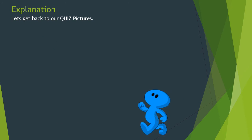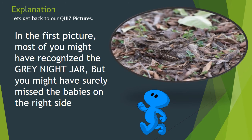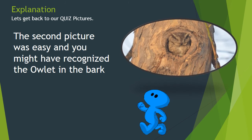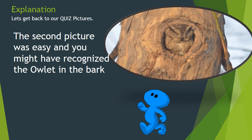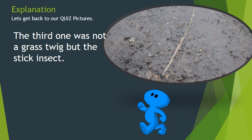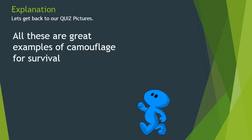Let's get back to our cool pictures. In the first picture, most of you might have recognized the grey nightjar, but you might have surely missed the babies on the right side. The second picture was easy, and you might have recognized the owlet in the bark. The third one was not a grass twig, but the stick insect. All these are great examples of camouflage for survival.